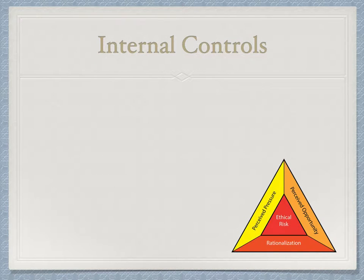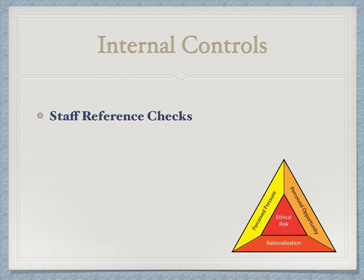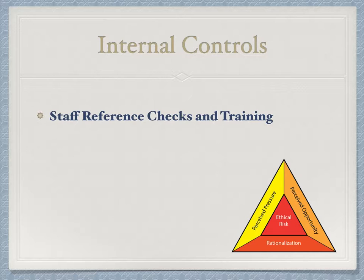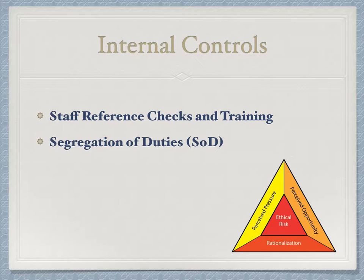Time for some internal controls. Gemstar, along with any other business, needs to actively protect itself and minimize its risk. That is done through internal controls like staff reference checks and training, which is the first line of defense. Resume reference checks, background checks, and credit checks are all ways to get to know who the company is hiring and reduce fraud, theft, and complacency. Segregation of duties is a policy where employees share responsibilities within a key function of a company process, such as authorizing and approving transactions, making journal entries, and tracking payments. Having employees work alongside each other reduces opportunity for fraud, theft, and human error.